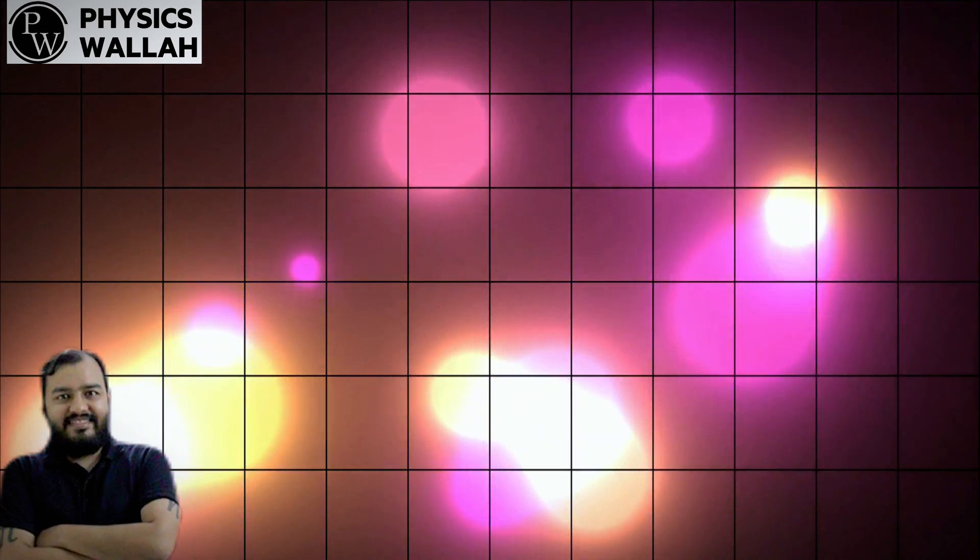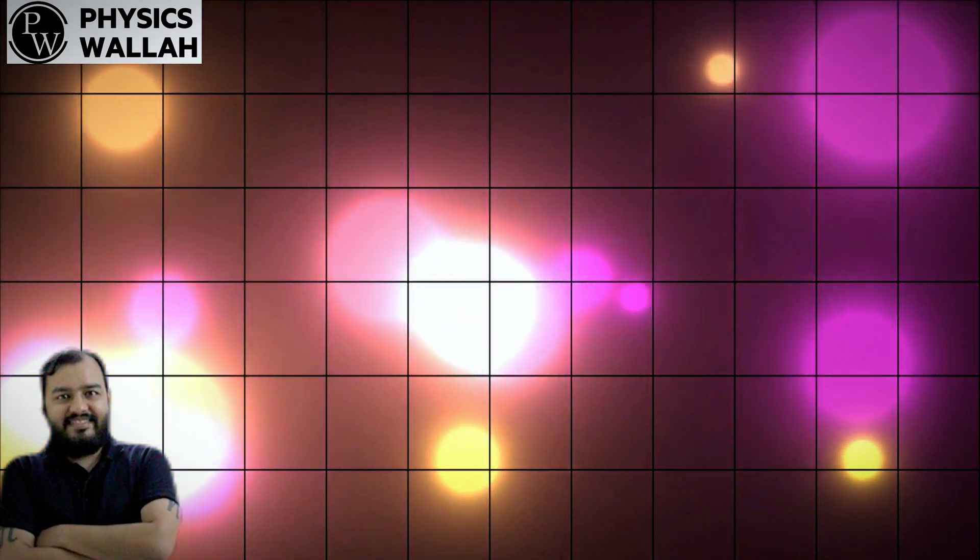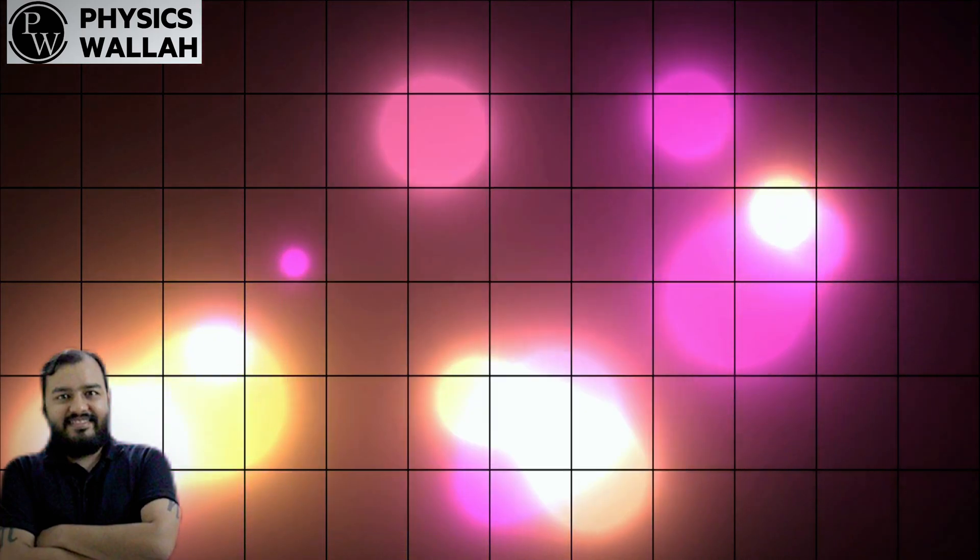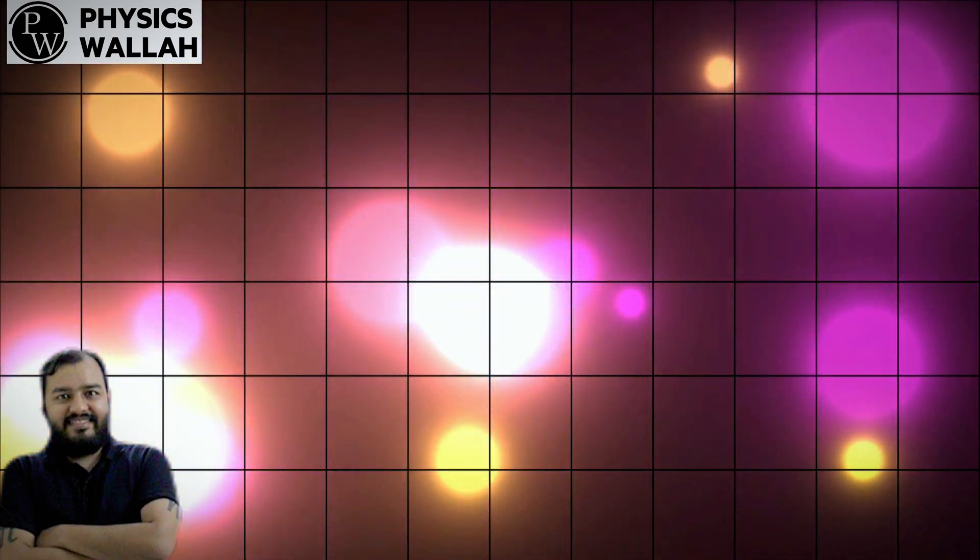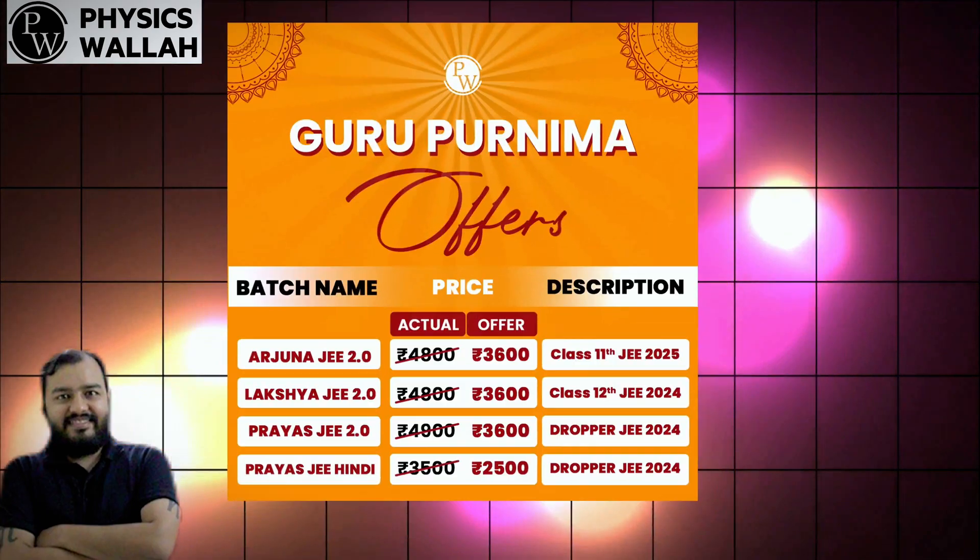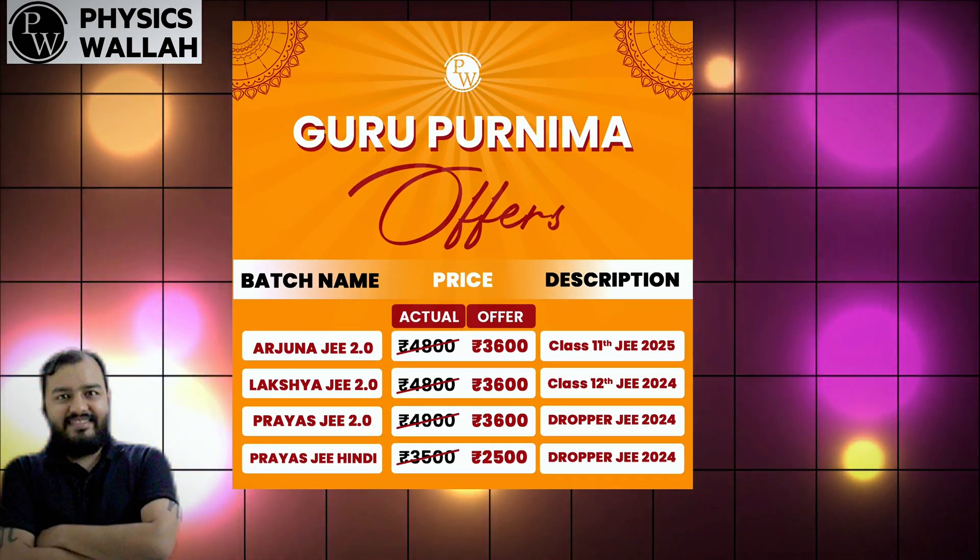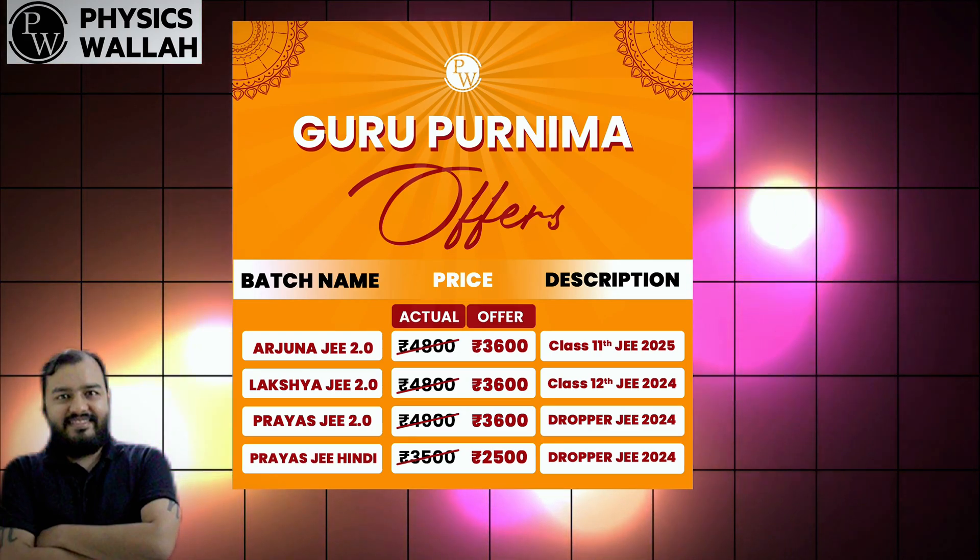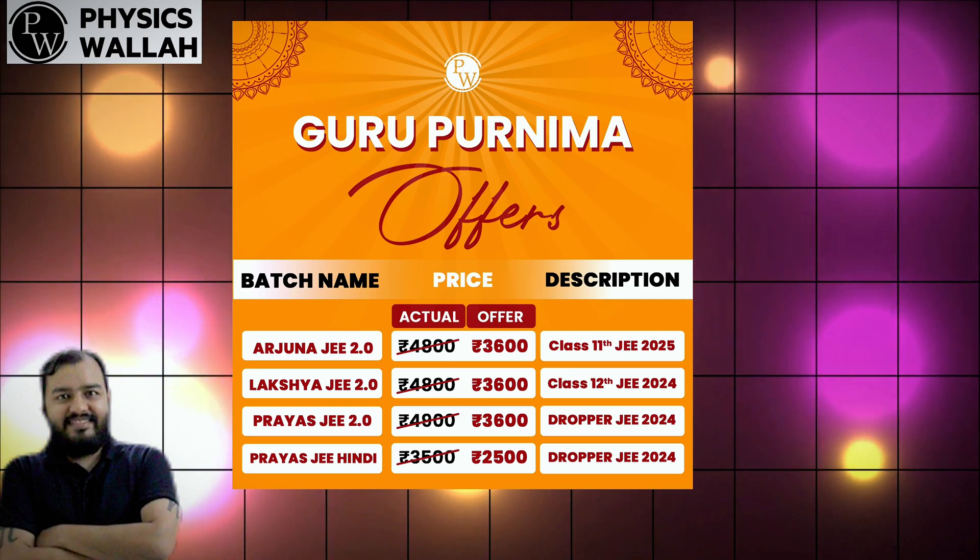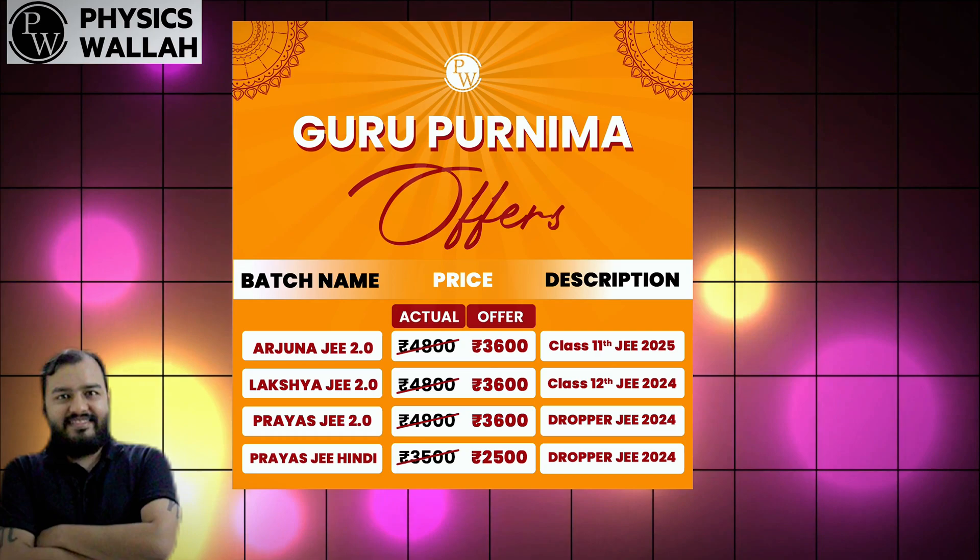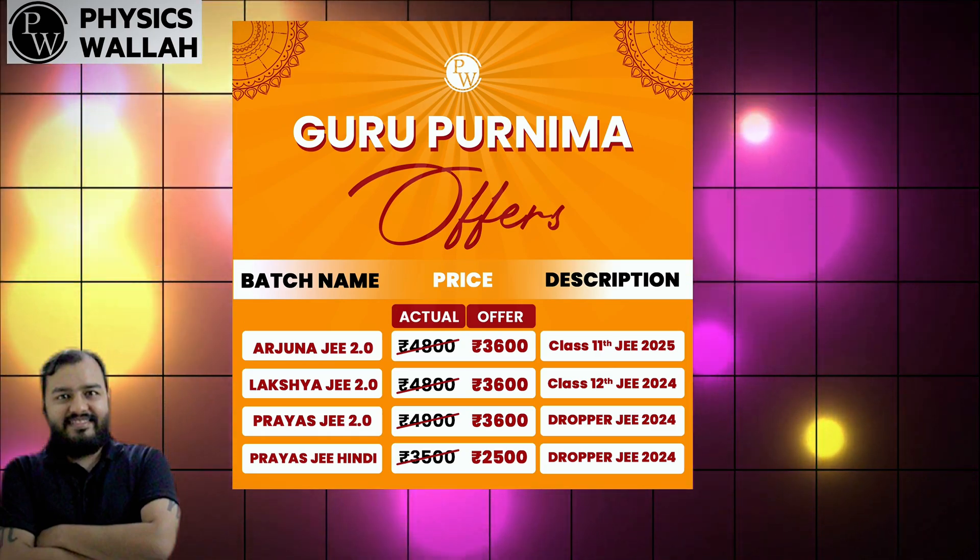PW से पढ़ कर लाखों बच्चों ने अपने सपने को पूरा किया है और इस बार JEE 2023 में PW ने हजारों बच्चों को Future Engineers बनाए है। आपकी IIT जाने के सपने को पूरा करने में PW आपकी help करने के लिए new batches लेकर आया है और PW celebrate कर रहा है Guru Purnima और आप सभी students के लिए लेकर आया है सारे इस batches पे big discount from 3rd to 8th July. So Arjuna JEE 2.0 batch for class 11th जो की JEE 2025 focused batch है वो आपको मिल रहा है 3600 में। और Lakshya JEE 2.0 2024 batch for class 12th जो की JEE 2025 focused है वो भी आपको 3600 में मिल रहा है।